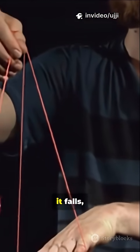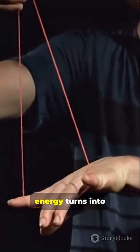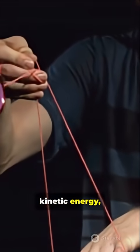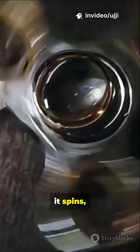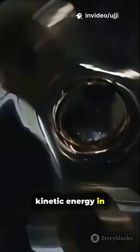When you release the yo-yo, it falls, and the potential energy turns into kinetic energy, the energy of motion. As it drops, it spins, storing some of the kinetic energy in its rotation.